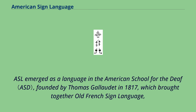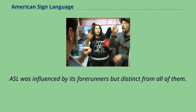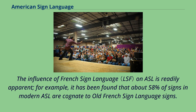ASL emerged as a language in the American School for the Deaf, founded by Thomas Gallaudet in 1817, which brought together Old French Sign Language, various village sign languages and home sign systems. ASL was created in that situation by language contact, influenced by its forerunners but distinct from all of them. The influence of French Sign Language on ASL is readily apparent.